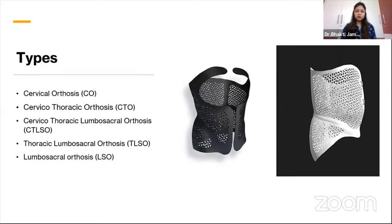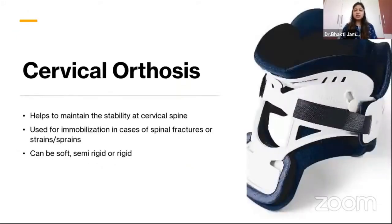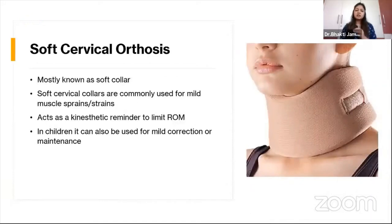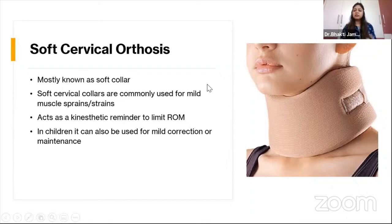We will try to cover each type and their subtypes in this module. The first is cervical orthosis — the simplest form of spinal orthosis. Its role is to stabilize and immobilize the cervical spine in cases of stable or unstable fractures. It can be a soft collar, semi-rigid collar, or rigid collar depending on the patient's requirement. The soft cervical collar is most commonly used for mild to moderate sprains, providing mild immobilization and acting as a kinesthetic reminder to limit range of motion. It can also be used in children for head position maintenance.